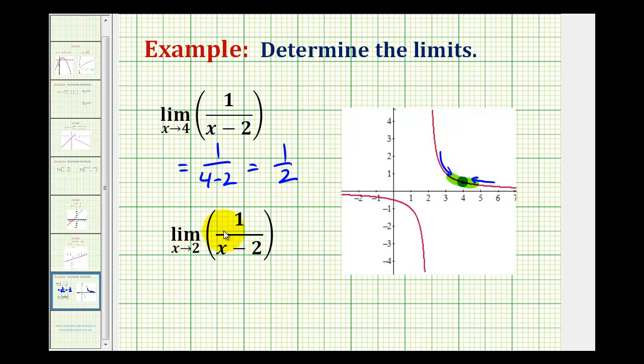For the second example, we have the limit as x approaches positive two of one over x minus two. And if we try to perform direct substitution, notice that we have a denominator of zero, and therefore the function is undefined at x equals two. So for this one, without looking at the graph, I want to determine the left-sided and right-sided limit separately. And then we'll verify them graphically.